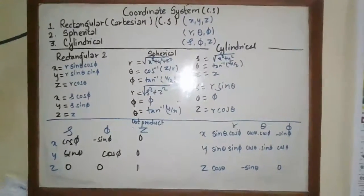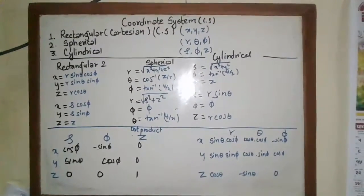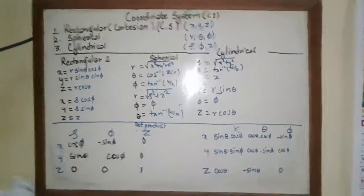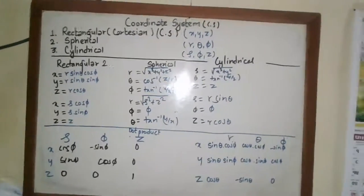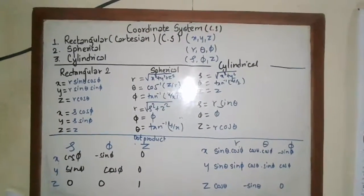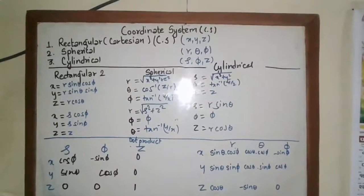First of all, we have to understand what is the coordinate we use in the coordinate system. Here are three main types that are rectangular, spherical and cylindrical and their respective coordinates are x, y, z, r, theta and phi and rho, phi, z.